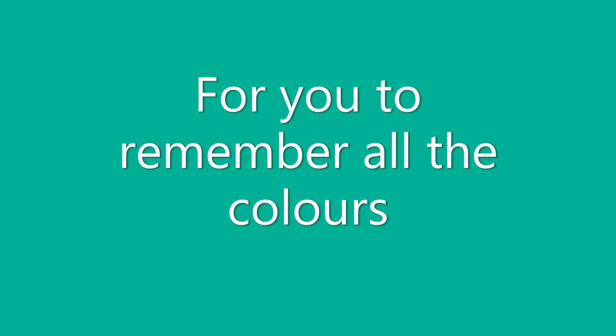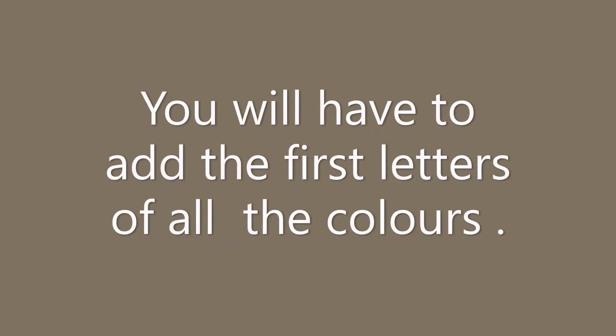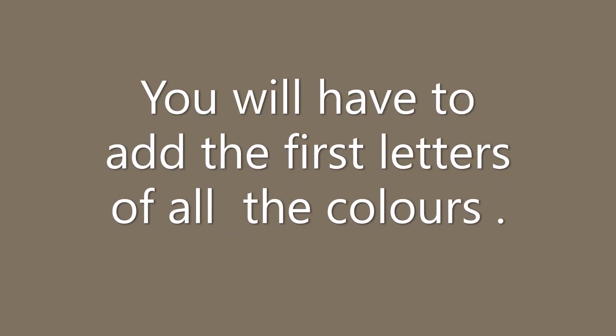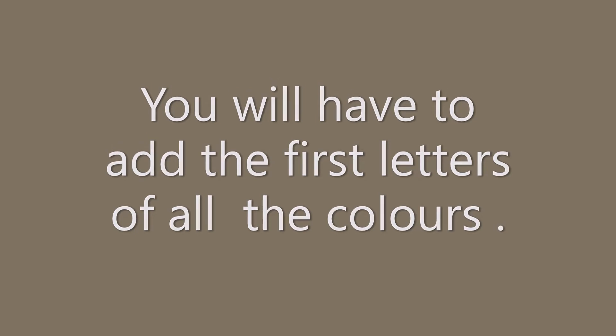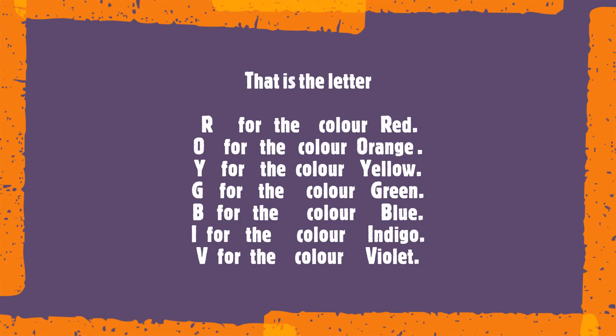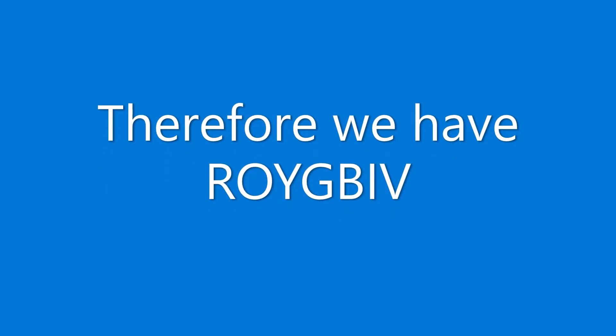For you to remember all the colors, you will have to take the first letters of all the colors. That is the letter R for red, O for orange, Y for yellow, G for green, B for blue, I for indigo, and V for violet. Therefore we have Roig beef.